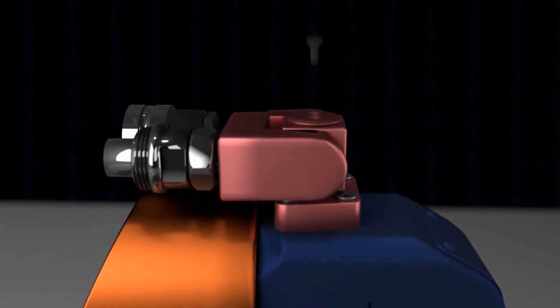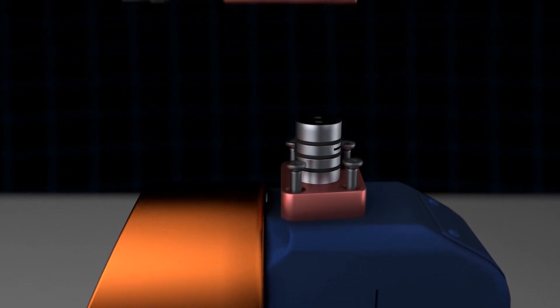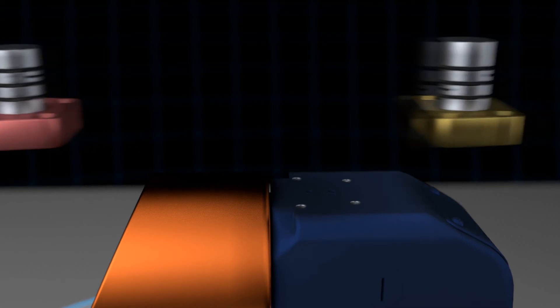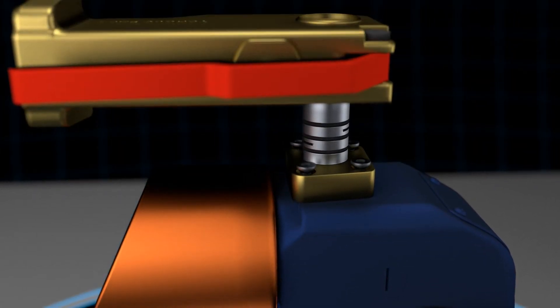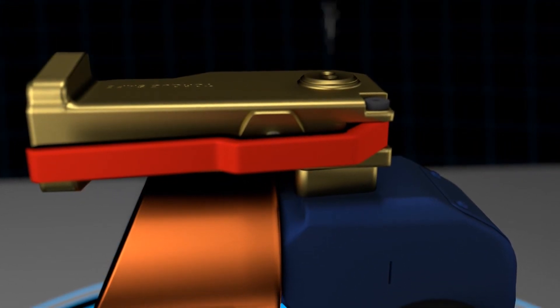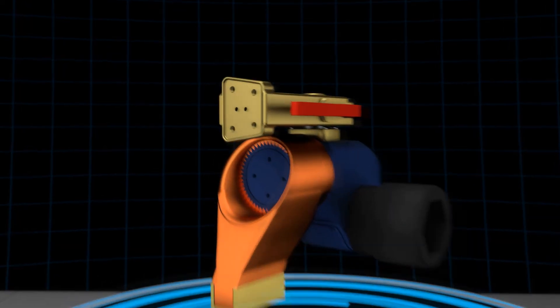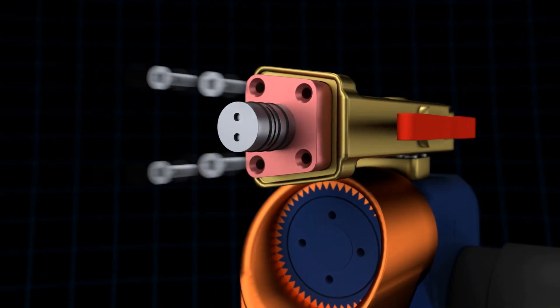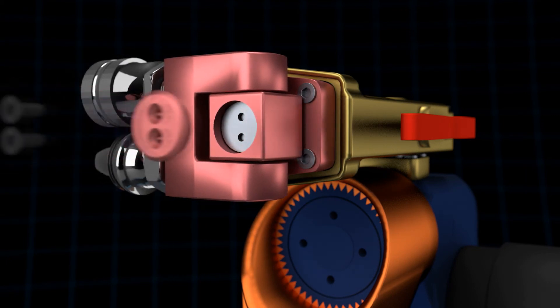The TorxSafe becomes a permanent part of the tool and does not need to be removed. The hydraulic torque wrench becomes safer without compromising the operation of the torque settings. The TorxSafe is designed to be a retrofit for the majority of hydraulic torque wrench models.